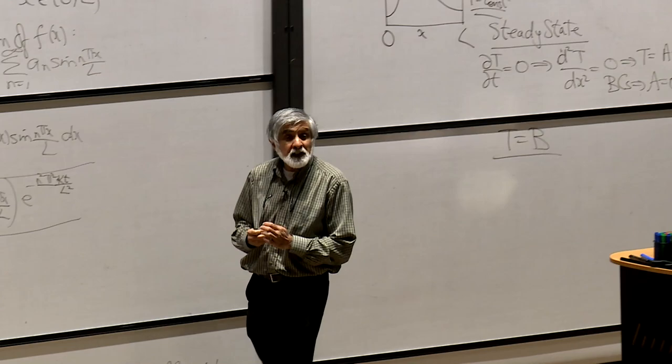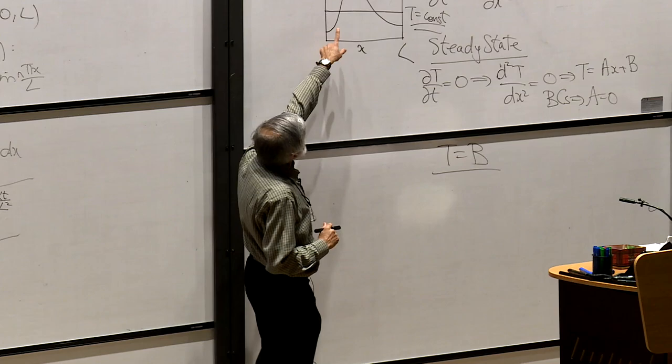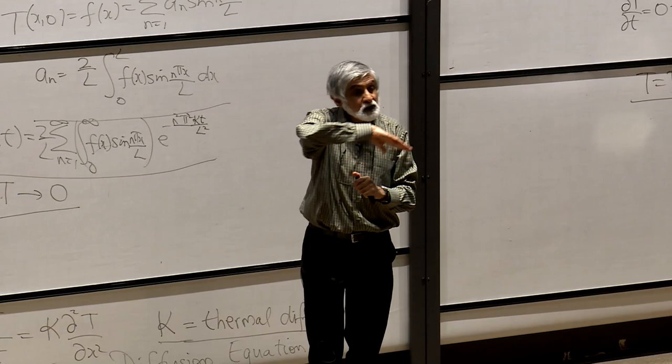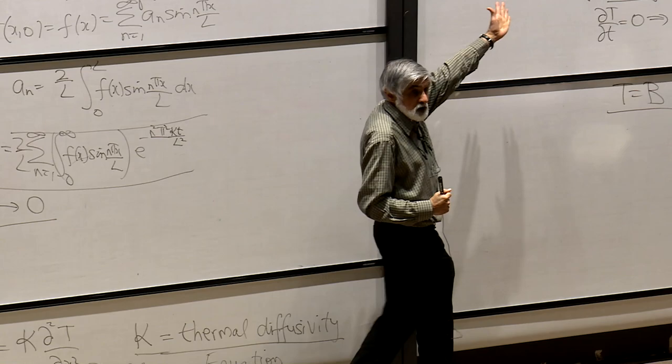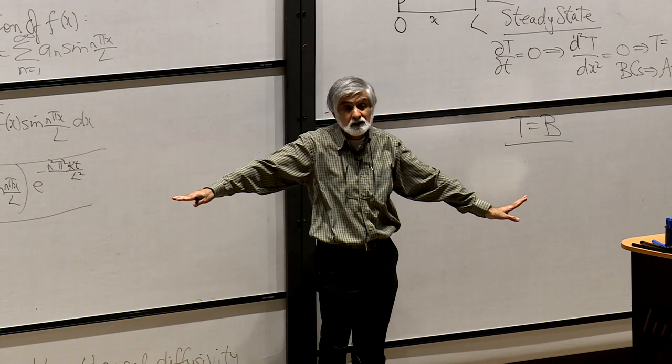So if we have diffusion, and if we start off with any spatial structure in our temperature, diffusion will wipe that out and just give you a flat distribution. Diffusion wipes out spatial pattern.